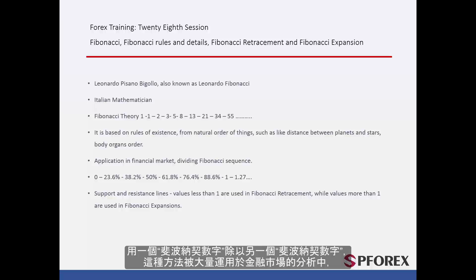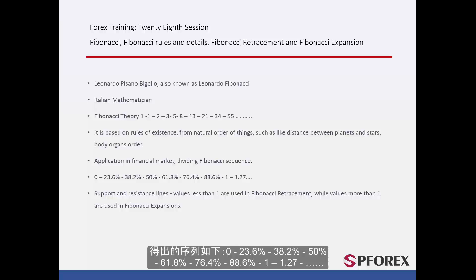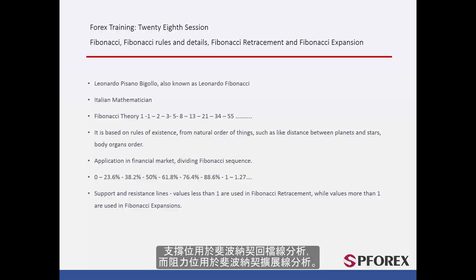The result of a given Fibonacci number divided by another Fibonacci number is used in financial markets considerably. The sequence is 0, 23.6%, 38.2%, 50%, 61.8%, 76.4%, 88.6%, 1, and 1.27. The numbers between 0 and 1 can be represented as percentages which develop supportive levels, while numbers above 1 create resistance levels. Supportive levels are used in retracement Fibonacci, while resistance levels are used in expansion Fibonacci.